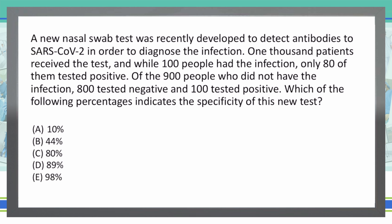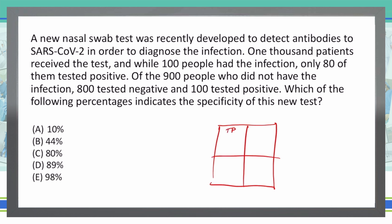First thing we're going to do is pull out our 2x2 chart. We're going to draw our box and do this on the test. We know that the top left is our true positive, then we have our false positive, false negative, and true negative.